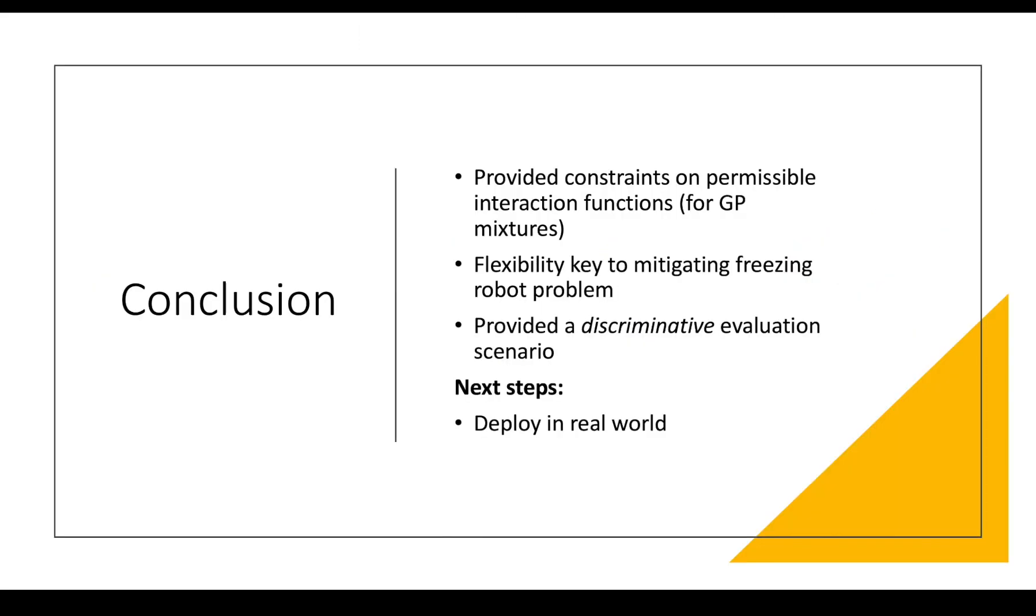So there's more charts in the paper in more detail, of course. But the conclusion here is that we provided constraints on permissible interaction functions, in particular for GP mixtures and that factorization that we talked about, show that flexibility is the key to mitigating the freezing robot problem. And we provided a discriminative evaluation scenario. Our next steps are to deploy in the real world. There's lots of theoretical avenues that we could explore. But really, because the gold standard is deploying in real world environments, it sort of has to be our next step. Thank you.